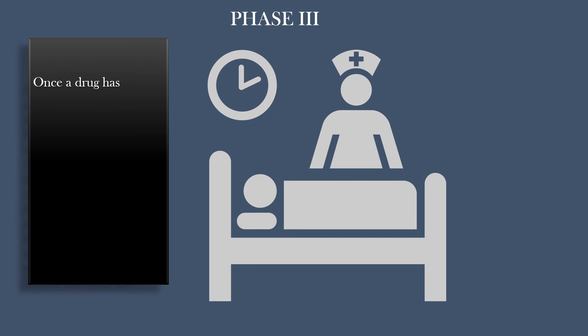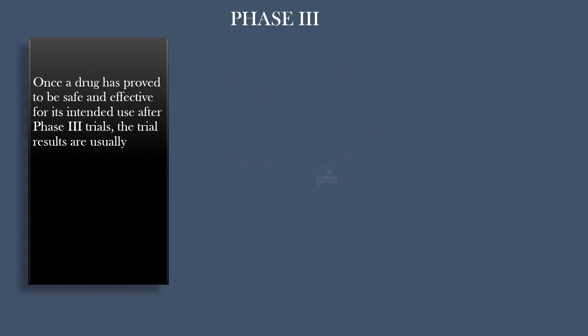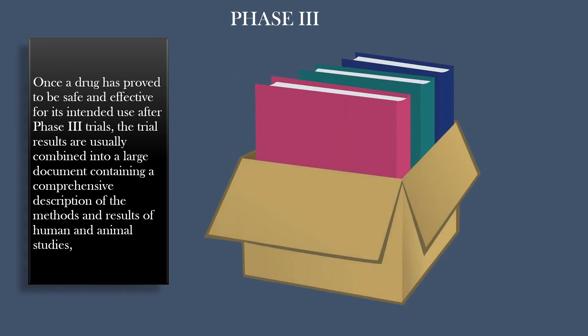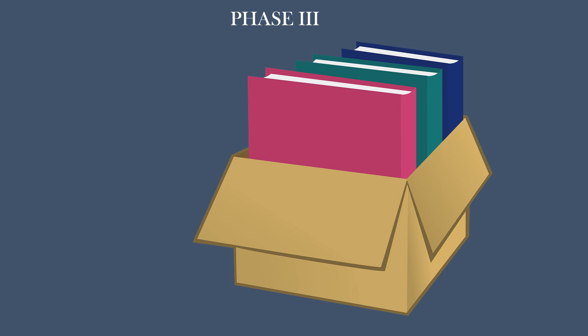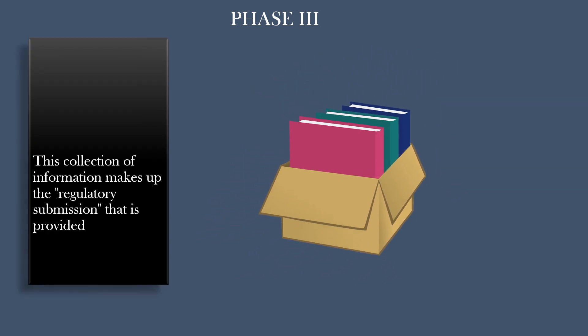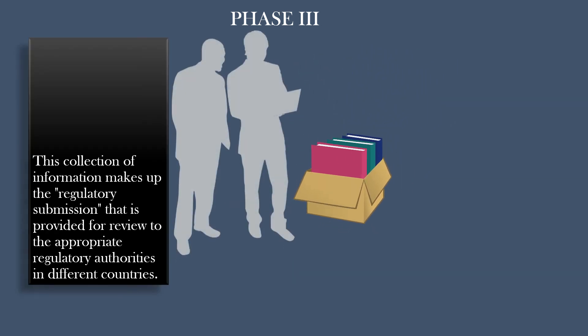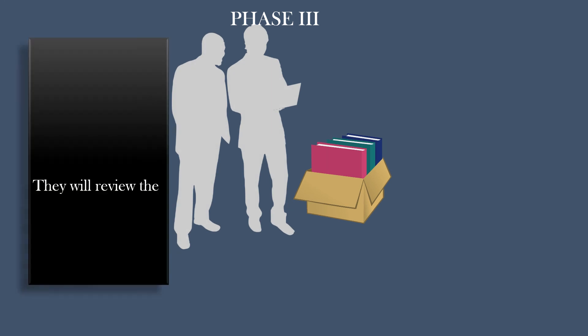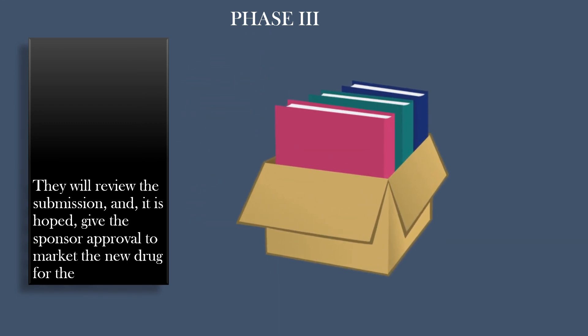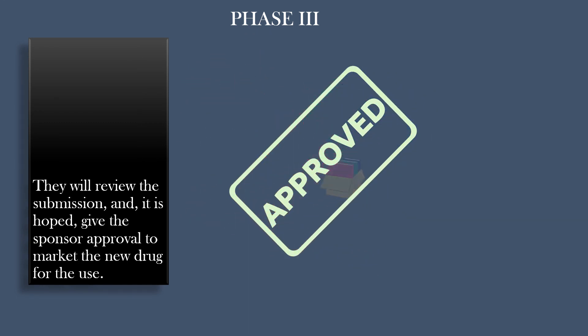Once a drug has proved to be safe and effective for its intended use after Phase 3 trials, the trial results are usually combined into a large document containing a comprehensive description of the methods and results of human and animal studies, manufacturing procedures, formulation details, and shelf life. This collection of information makes up the regulatory submission that is provided for review to the appropriate regulatory authorities in different countries. They will review the submission and, it is hoped, give the sponsor approval to market the new drug.